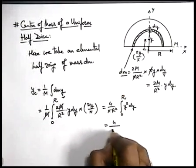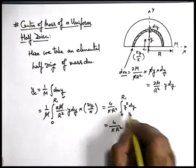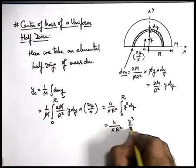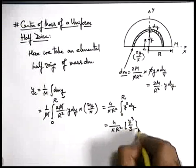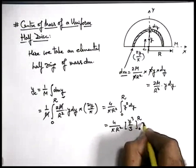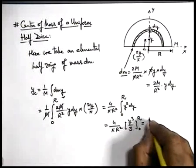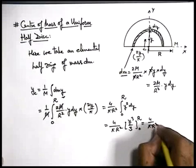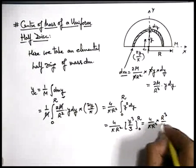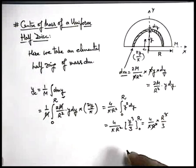So if we integrate this will give us 4/(πr²) × y³/3, and limits will be from zero to r. So this will give us 4/(πr²) × r³/3. Here r² gets cancelled out.